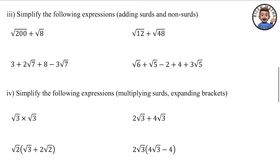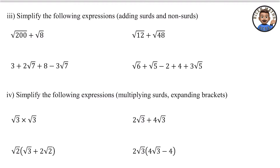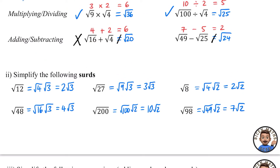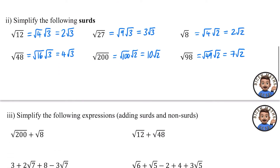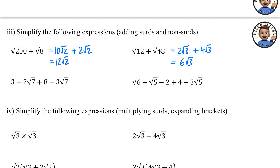Now let's look at adding and subtracting surds. You can't add them directly, but once simplified you can combine like terms. √200 = 10√2 and √8 = 2√2, so 10√2 + 2√2 = 12√2. Similarly, √12 = 2√3 and √48 = 4√3, so 2√3 + 4√3 = 6√3.